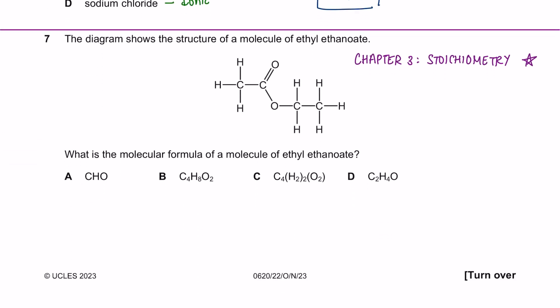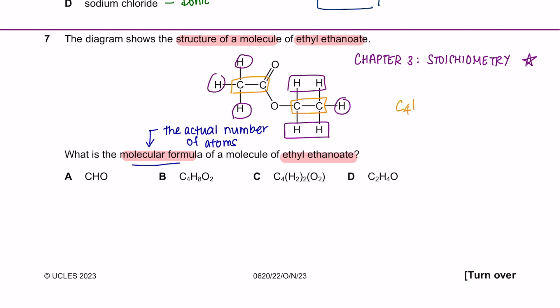Question 7 onwards is from Chapter 3, Stoichiometry. The diagram shows the structure of a molecule of ethyl ethanoate. What is the molecular formula of a molecule of ethyl ethanoate? The molecular formula tells you the actual number of atoms of each element in one molecule of the compound. As we can see here, there are four C's, eight hydrogens, and two oxygens. So the answer is B.